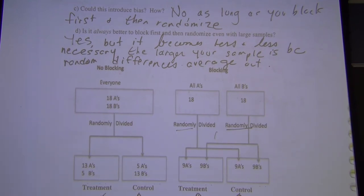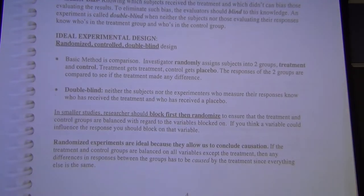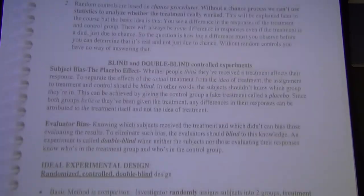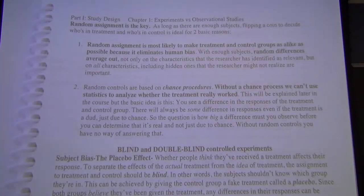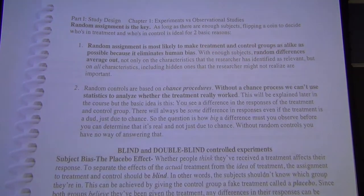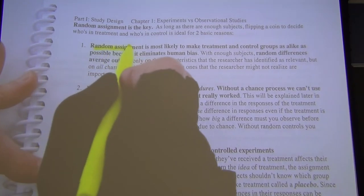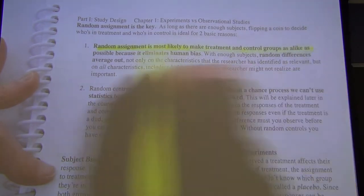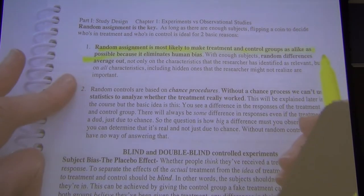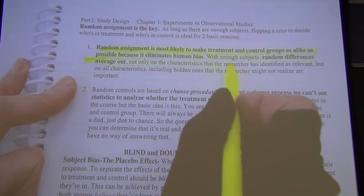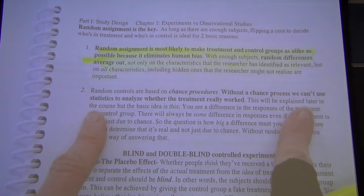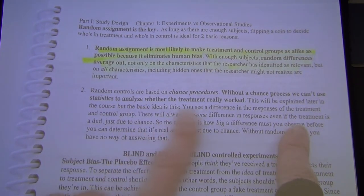Summary: with enough subjects, flipping a coin to assign treatment and control is ideal — it eliminates systematic differences, and accidental differences average out in the long run. A chance procedure is essential; without it, we can't use statistics to analyze whether the treatment really worked.